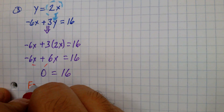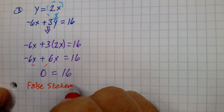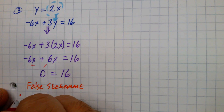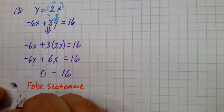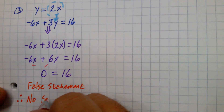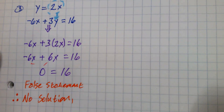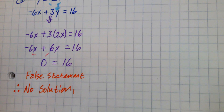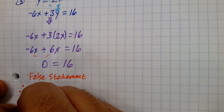0 equals 16 is a false statement, so therefore there is no solution. When graphed, these two lines will be parallel lines.